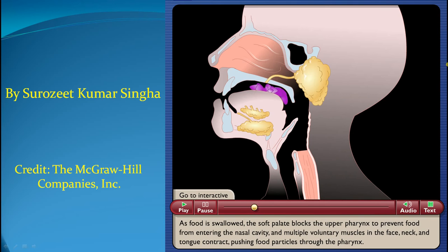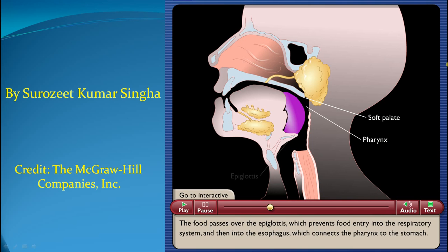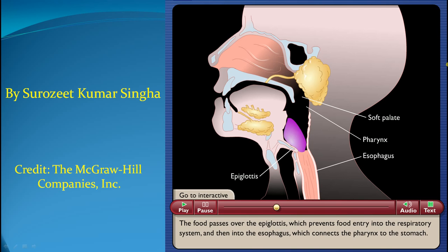As food is swallowed, the soft palate blocks the upper pharynx to prevent food from entering the nasal cavity, and multiple voluntary muscles in the face, neck, and tongue contract, pushing food particles through the pharynx. The food passes over the epiglottis, which prevents food entry into the respiratory system, and then into the esophagus, which connects the pharynx to the stomach.